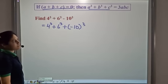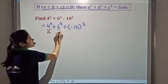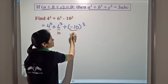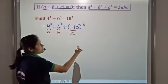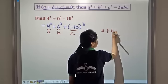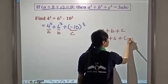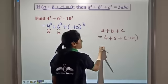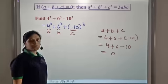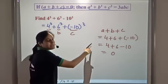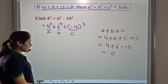But we can use it only if this condition holds. So let us check whether it holds. Compare 4 to a, 6 to b, and negative 10 to c. Note that negative 10 is c; 10 is not c. Now a plus b plus c is equal to 4 plus 6 plus negative 10, which is equal to 4 plus 6 minus 10, which is equal to 0. So we have a plus b plus c equal to 0, so yes, this condition holds. Hence we can use this identity.